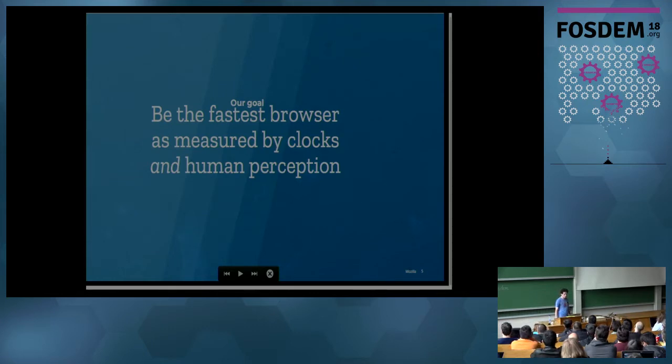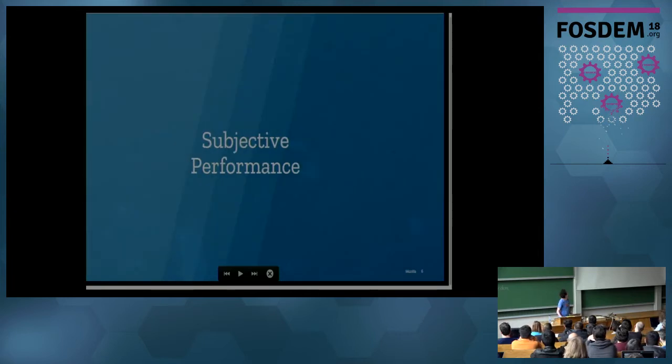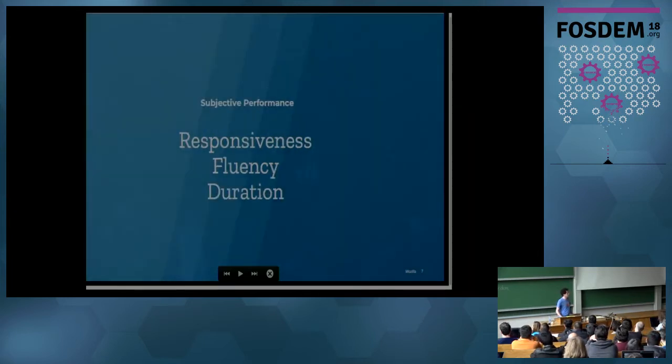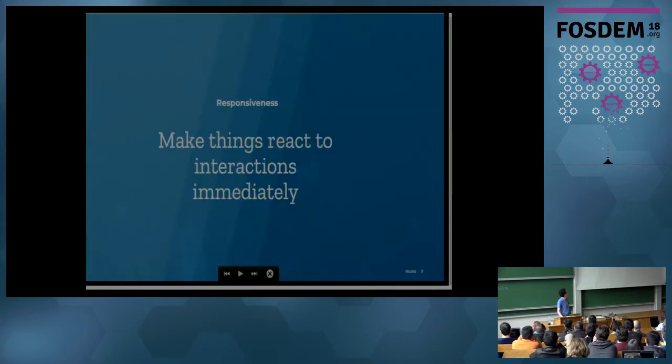So, from the designer's perspective, what was important is to be faster measured by clocks, but especially by human perceptions, because performance is really a perception. It's really something subjective. And our designers studied this a lot. They did lots of research, including benchmarking things with real humans in front of various versions of browsers to compare and see how users would feel, what they would prefer. And they identified three most important things. One is responsiveness, fluency, and duration.